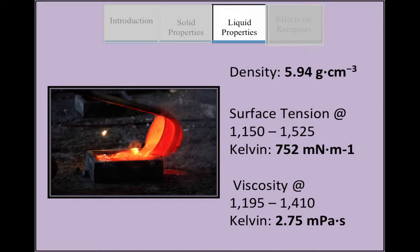The density of liquid lanthanum is 5.94 grams per centimeter cubed. The surface tension of liquid lanthanum is 752 millinewtons per meter and the viscosity of liquid lanthanum is 2.75 millipascal seconds.